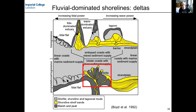In terms of map view, deltas are regressive, progradational features — they build out from the coastline. As we discussed when thinking about waves and storms, there's a continuum between wave-dominated deltas and strand plains.